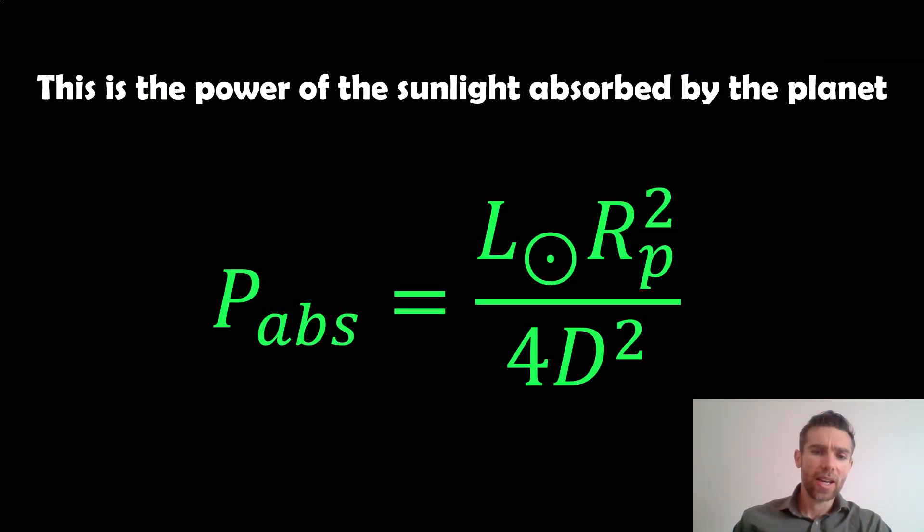That's our power absorbed. We've essentially got the distance of the planet from the star, the radius of the planet, and the luminosity of the Sun or star. It should make sense that if you had a more luminous star, the power absorbed by the planet would be greater. If it was a bigger planet, it would absorb more energy. If it was closer, more energy. So you can see how you're going to get hotter planets.